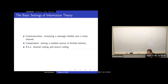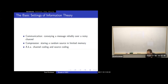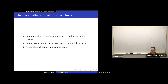In information theory, we have two basic settings. One is communication: we have a message we want to convey to someone in a different place, we have a noisy channel, and we want that person to be able to decode the message reliably. The other is compression: we have some source with some statistics, and we want to store it in memory taking as little space as possible. These two are known as channel coding and source coding, respectively.